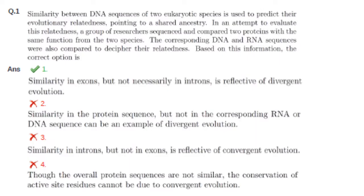Coming to the first question: similarity between DNA sequences of two eukaryotic species is used to predict their evolutionary relatedness, pointing to a shared ancestry. In an attempt to evaluate this relatedness, a group of researchers sequenced and compared two proteins with the same function from two species. The corresponding DNA and RNA sequences were also compared to decipher their relatedness. Based on this information, the correct option is...